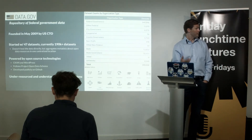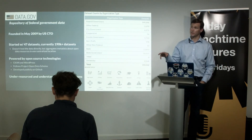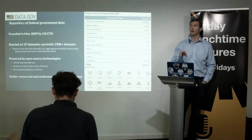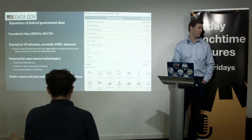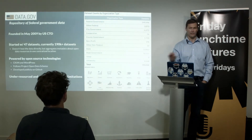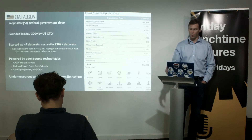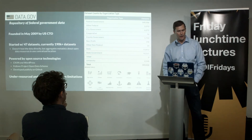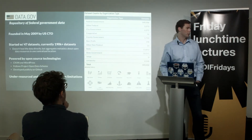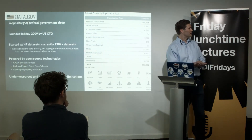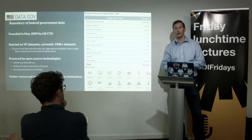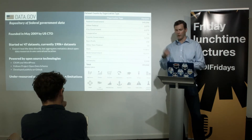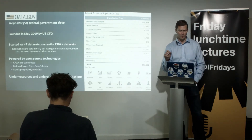Data.gov doesn't host the data itself — individual agencies are still responsible for hosting and updating it. Data.gov is really an aggregator of metadata and links to the individual data. It's powered by open source technologies — CKAN, the same as Data.gov.uk — and they publicly share their code on GitHub. Even at the technology level, they're embracing the concept of openness.